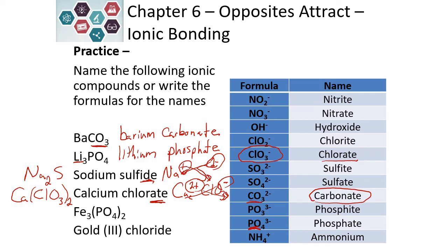We look at Fe on the periodic table — it is in the transition metals, so we do need to include the charge with the name. How do we figure out the charge? We look at the anion. PO4 has a negative 3 charge and there are 2 of them, so overall we have a negative 6. That means we have to have a positive 6 for our metal. Because there are 3 iron atoms, each one is going to be a plus 2 charge. So in this case, we would have iron(II) phosphate for the name.